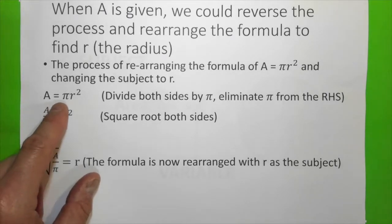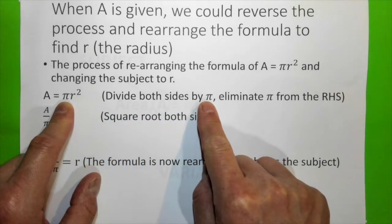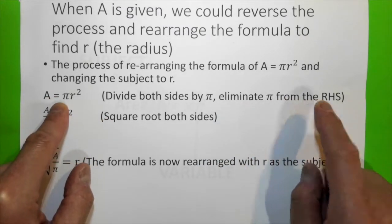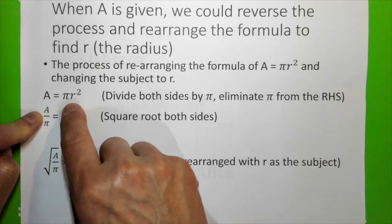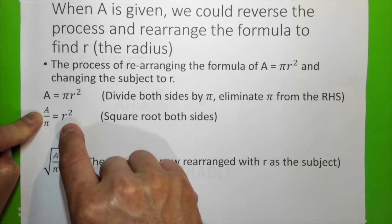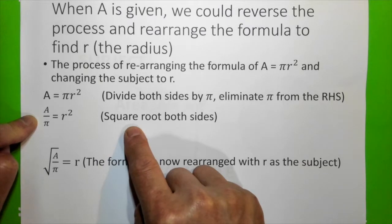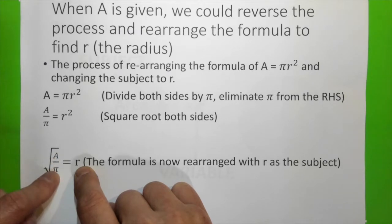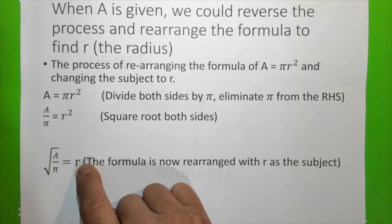We start with A = πr², then divide both sides by π to eliminate π from the right-hand side. A divided by π gives us r² on the right. We then take the square root of both sides, so r equals the square root of A over π. r is now the subject of the formula.